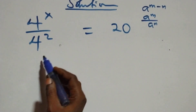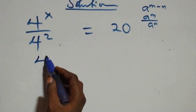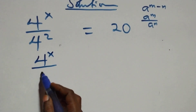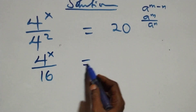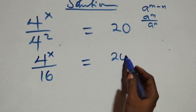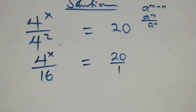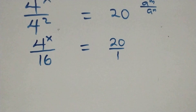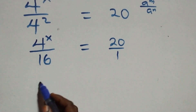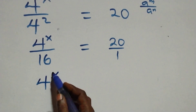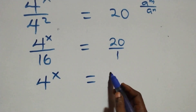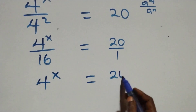This can be written as 4 raised to power x over 4 squared, and 4 times 4 is 16. So we have 4 raised to power x over 16 equals 20 over 1. Cross multiplying gives us 4 raised to power x equals 20 times 16.